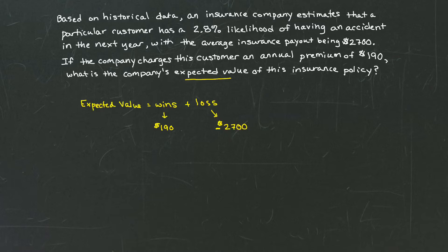So attached to the loss, we have a 2.8% likelihood of having an accident, which means there's a 2.8% likelihood that within the next year, the company is going to have to pay out or lose $2,700. So attached to this $2,700 that's in the negative, we have a percentage of 2.8%.